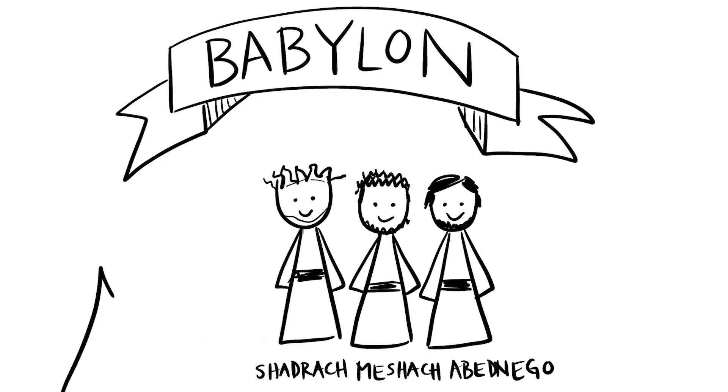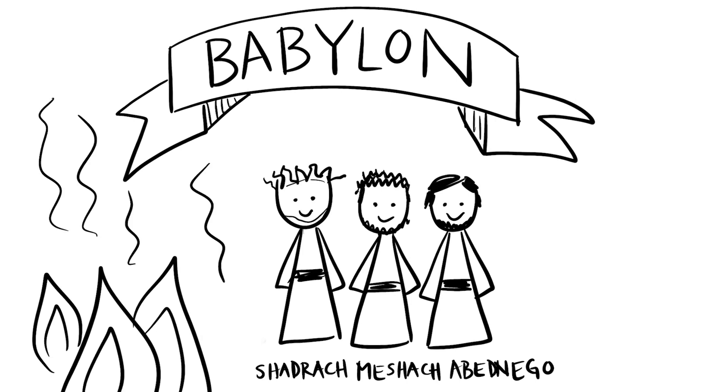These four men worked hard to serve the king, but they were loyal first and foremost to the one true God. While in exile, their loyalty to God was tested many times. One time, King Nebuchadnezzar set up a statue of himself and told everyone to bow down and worship it. When Shadrach, Meshach, and Abednego refused, they were thrown into a fiery furnace.